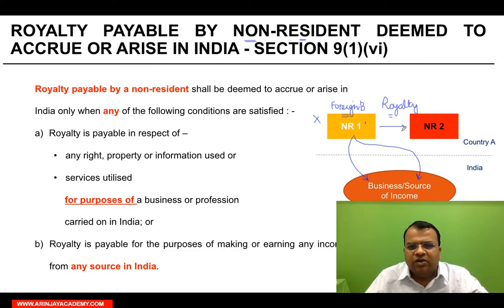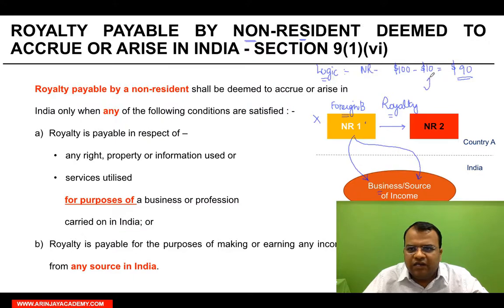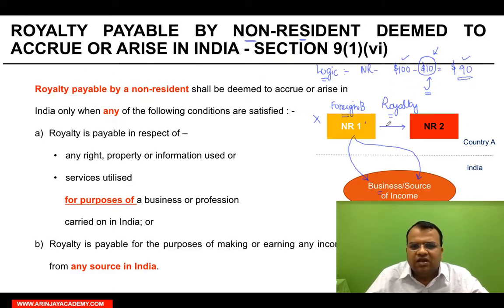There is an important logic here: why do we tax this income in India in the case of a non-resident? If a non-resident earns income from India — say income of 100 dollars — and pays royalty of 10 dollars to another non-resident, the non-resident's Indian income becomes only 90 dollars. From the Indian government's perspective, they have allowed a tax deduction of 10 dollars. Without this provision, tax would be on 100 dollars, not 90.